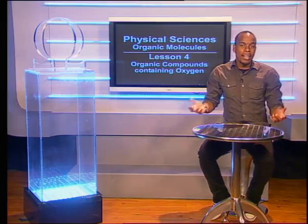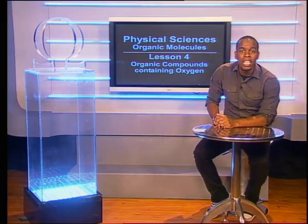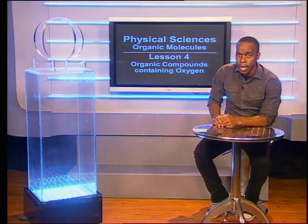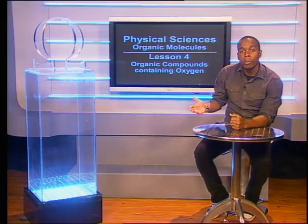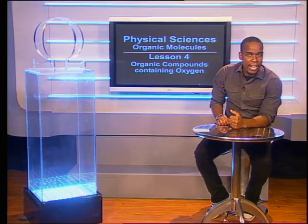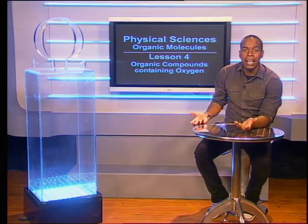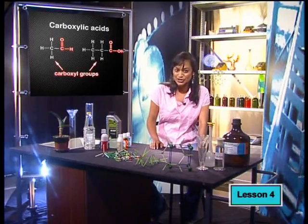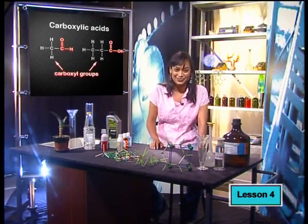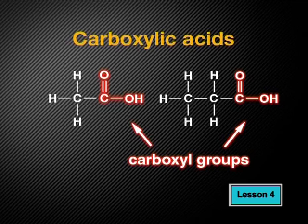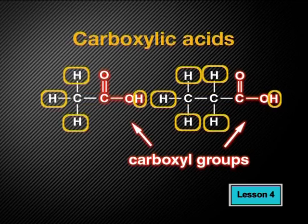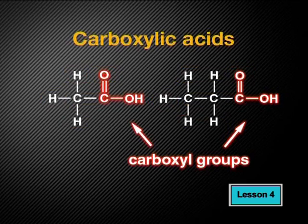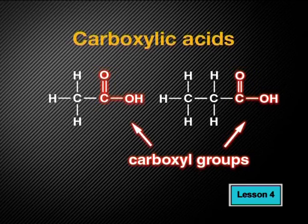We hope you now have a better understanding of the homologous series we call alcohols. Let's go back to Amira to hear about the next homologous series — the organic acids, and how to use these acids to make esters. I'd like to introduce you to carboxylic acids. This group of molecules also contains carbon, hydrogen, and oxygen.